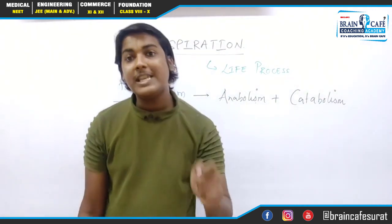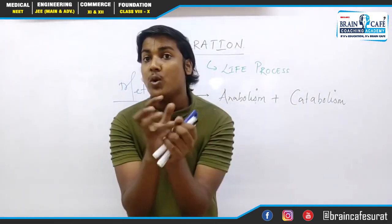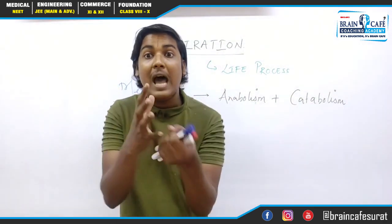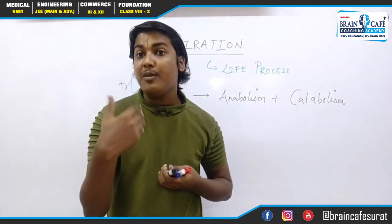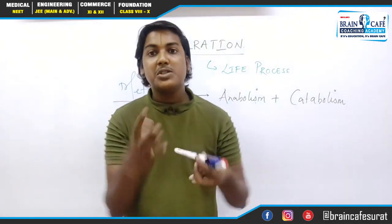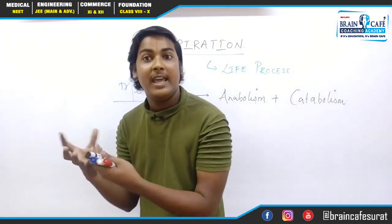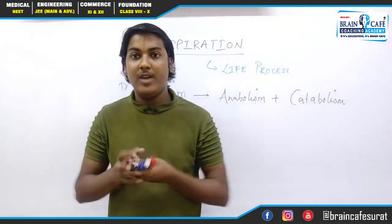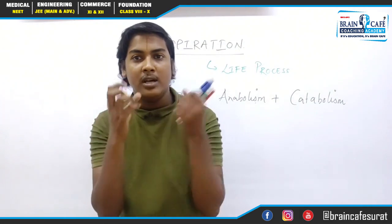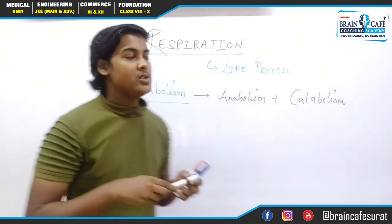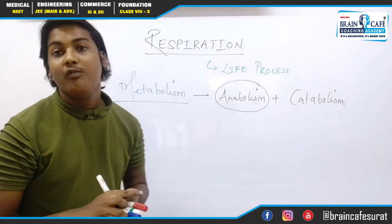Now what is the anabolic process? The anabolic process is where we take small, small molecules and combine them to make a big molecule. These types of reactions are called synthesis reactions. Synthesis reaction means that we are producing something — making something new from small, different molecules. So a basic example of anabolism is photosynthesis.